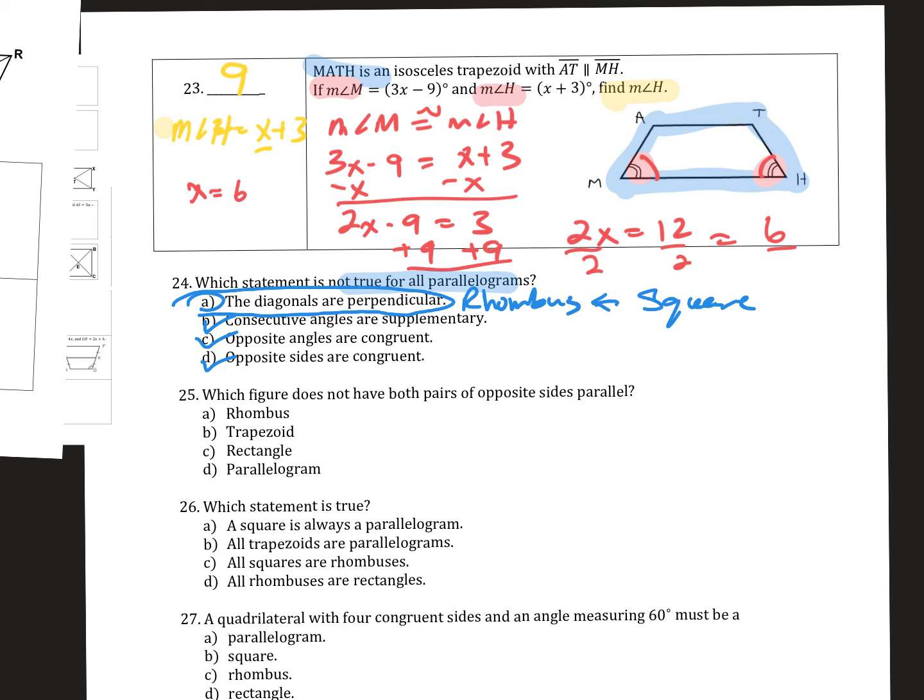Number 25. Which of the figures does not have both pairs of opposite sides parallel? Well, it's a trapezoid. Rhombus does, rectangle does, parallelogram does. But in a trapezoid these side ends are not parallel.